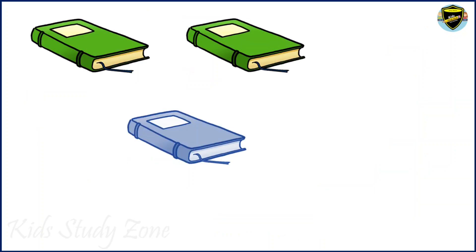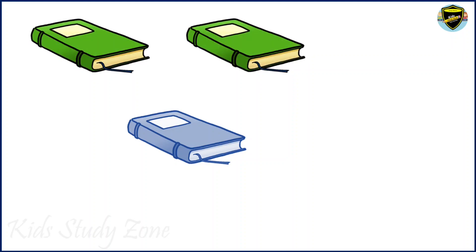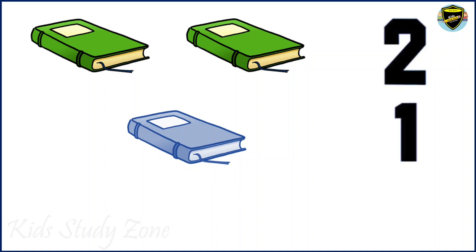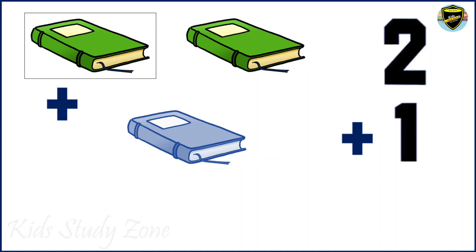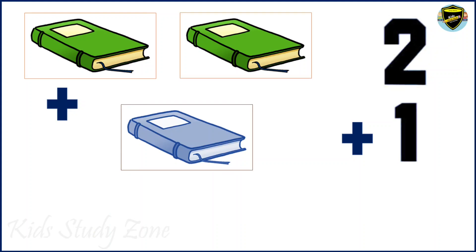Now let's count the total number of books. Can you see there are some green books and there is a blue book. We need to find the total number of books: 1, 2. Here you can see we have 2 green color books and 1 blue color book. The sign of addition is plus. Now we need to add this. Let's count together: 1, 2, 3. So total we have 3 books.